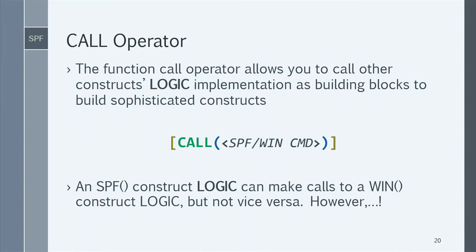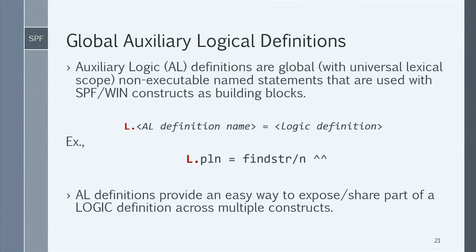For macros that cannot be executed on their own — useful for documentation, clarity, and visibility — there are global auxiliary logic definitions. These are non-executable named statements with universal lexical scope that can be used with SPF and Win constructs as building blocks. The syntax always starts with a capital 'L' followed by a dot, then the name of the auxiliary logic, followed by the logic itself.